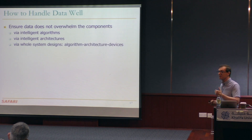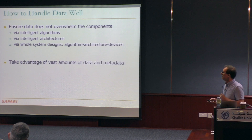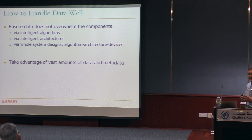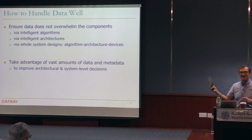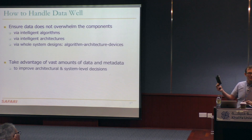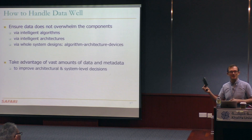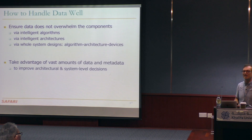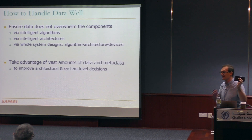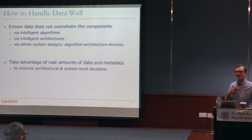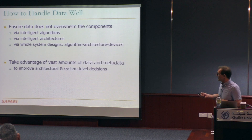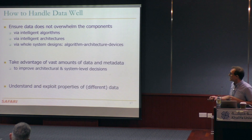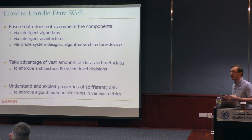To do this, we need intelligent algorithms and intelligent architectures — whole system designs where algorithm, architecture, and devices together are potentially specialized for different applications. On top of this, we need to take advantage of vast amounts of data and metadata that we have. Today, we're doing a very poor job. We're not improving architectural and system-level decisions based on what we've seen in the past. This phone has been operating for five years in my hands and has not learned anything at all to change its algorithms. The memory controller algorithm is exactly the same as the human-designed one, even though it's seen five years of information.